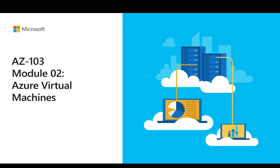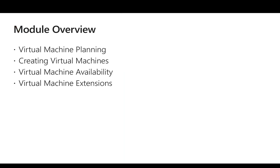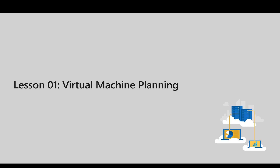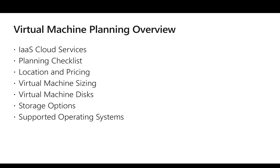Hello, welcome back. We are going to look at Module 2, which talks about Azure virtual machines. In this module there are four lessons covered: first is virtual machine planning, second is creating virtual machines, third focuses on how to set up high availability, and fourth speaks about virtual machine extensions. In this video we are going to look at Lesson 1, which is virtual machine planning. The lesson covers IaaS cloud services, a planning checklist for deploying VMs, location and pricing information, sizing information, disk and storage options, and finally the operating system support available for generations.